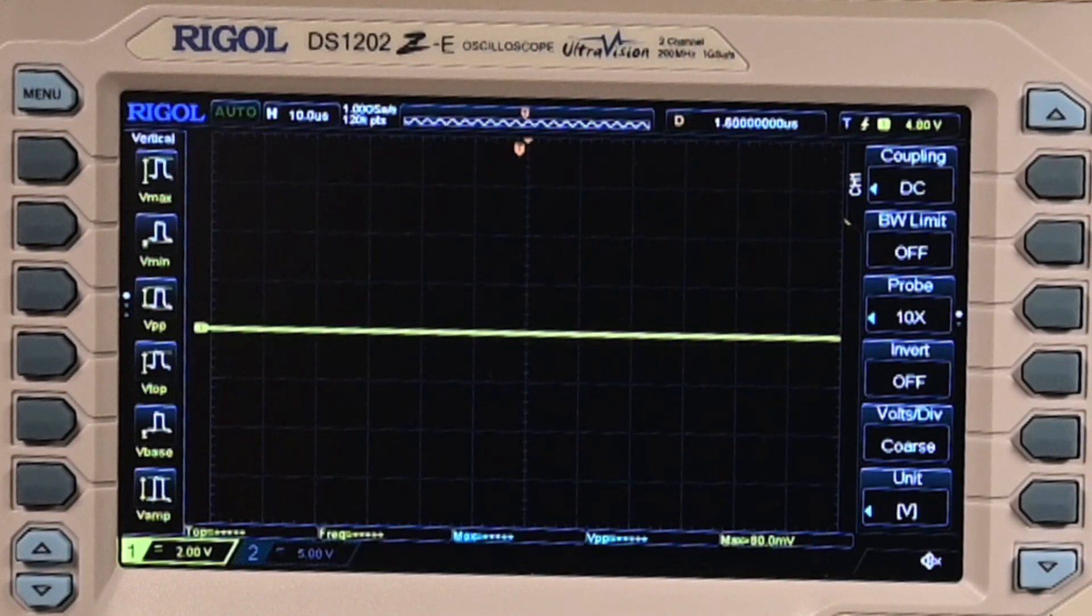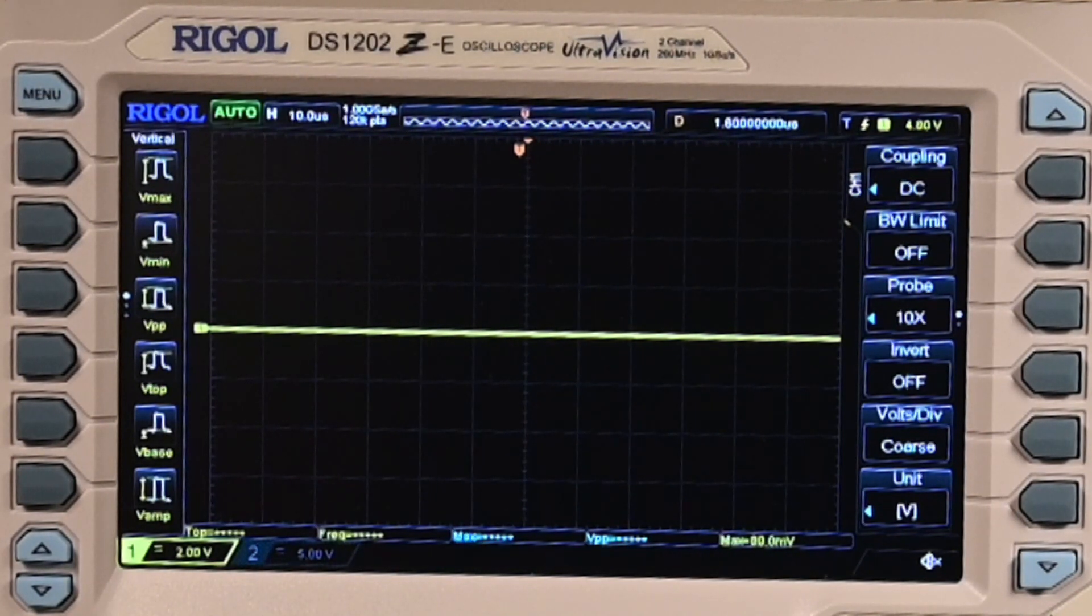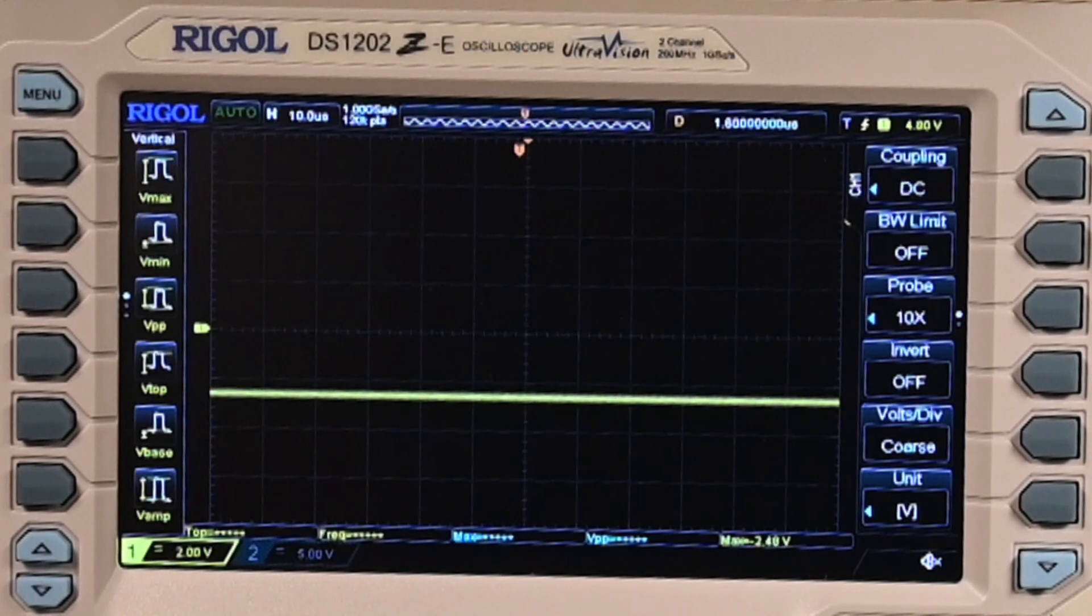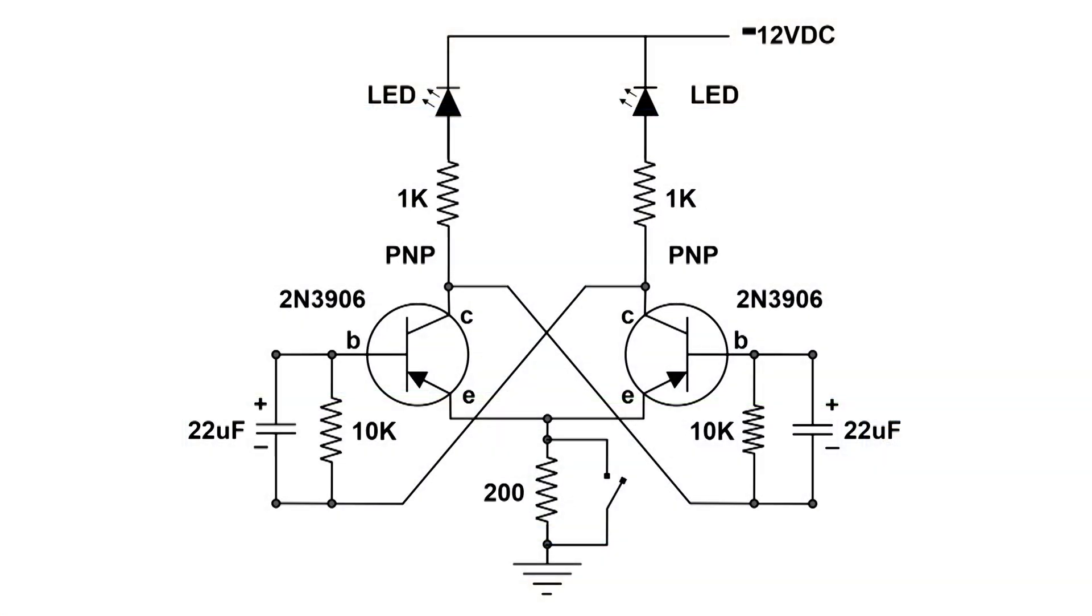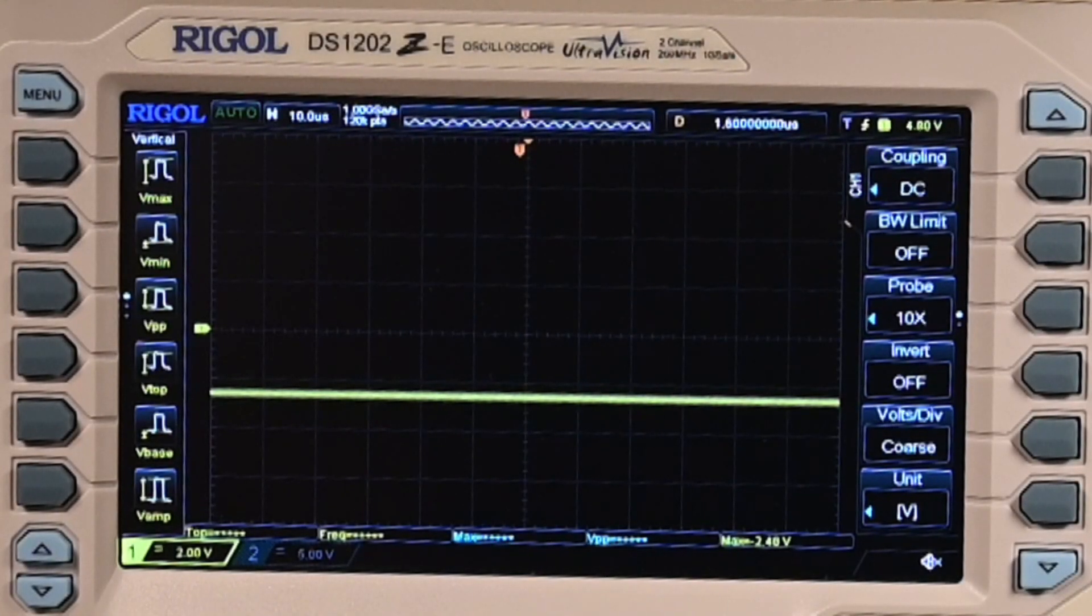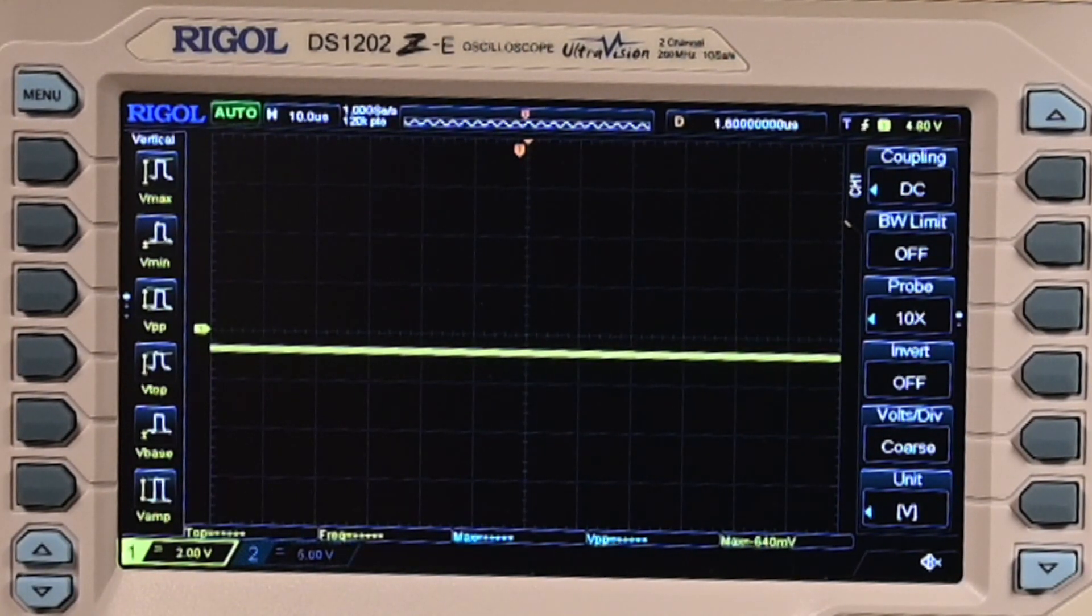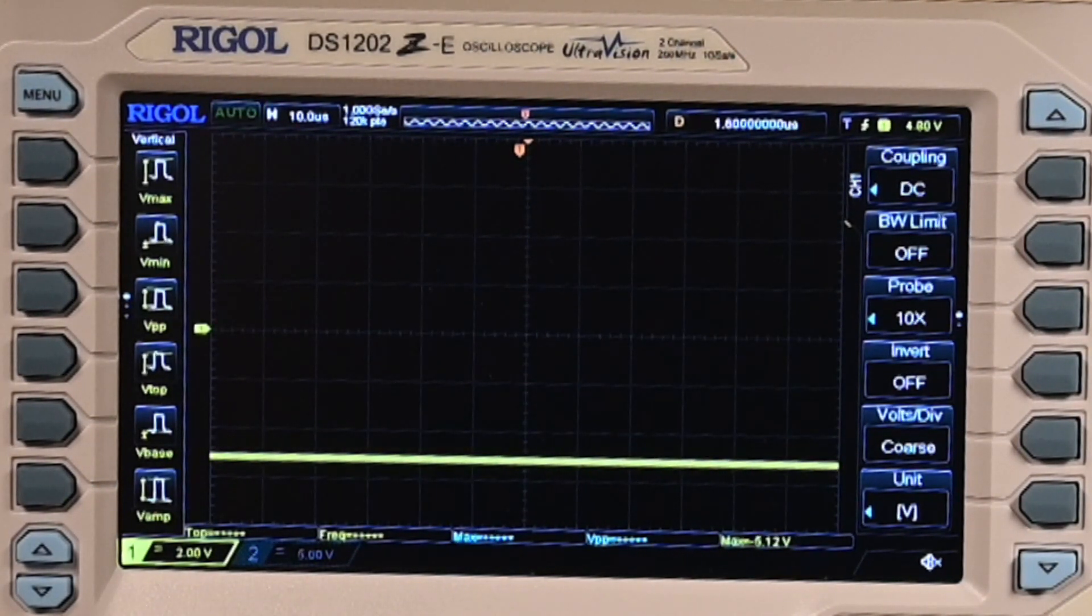Now I'm going to move the scope to the PNP. The left transistor is on, and to turn that off we're going to need a positive pulse. So I'm going to short out that 200 ohm resistor and let go. We get a positive pulse turning off that PNP transistor.